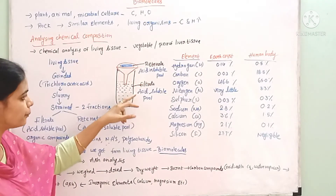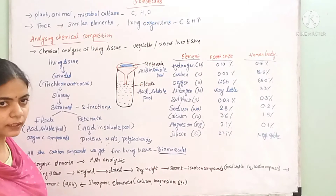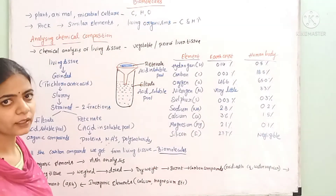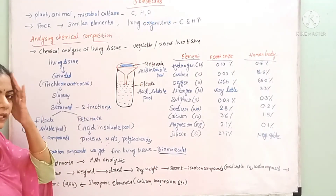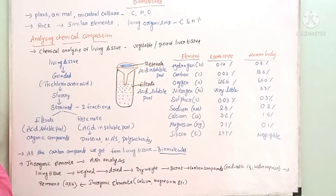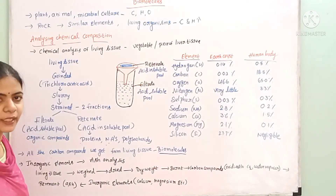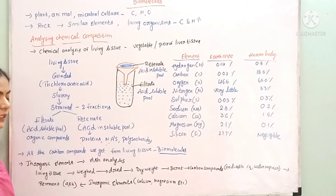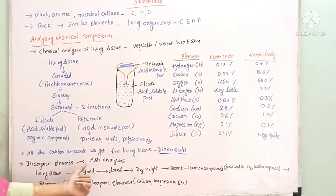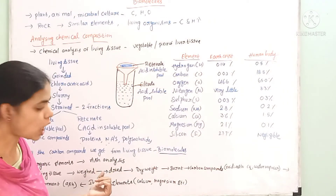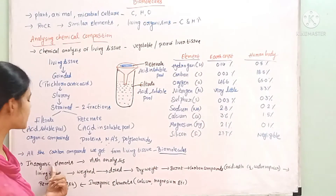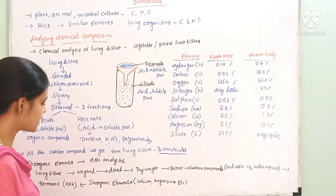The acid-soluble pool contains organic compounds. Living organisms also contain inorganic compounds. So, how do we analyze inorganic elements in the living organisms?